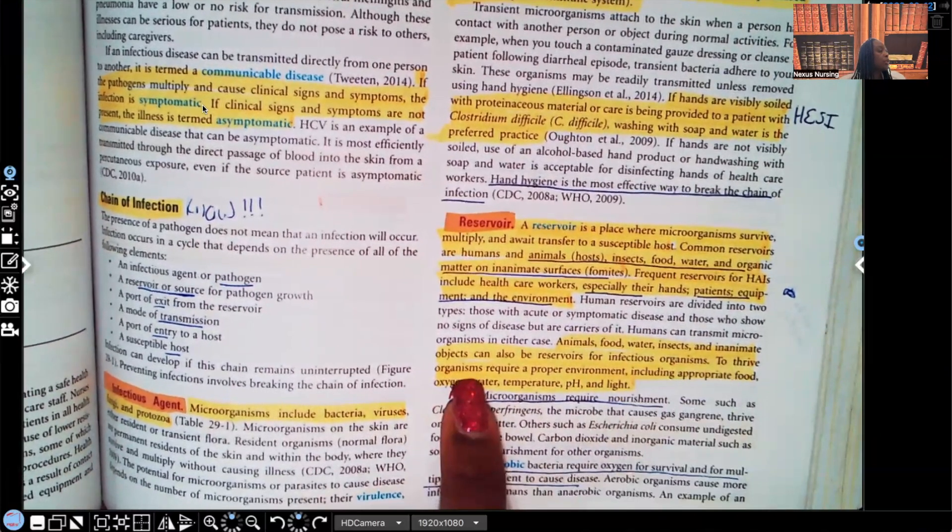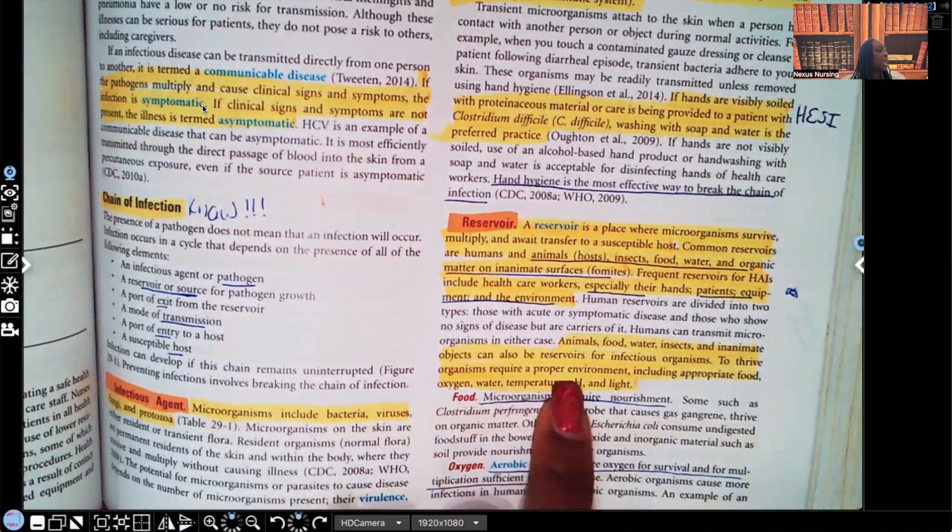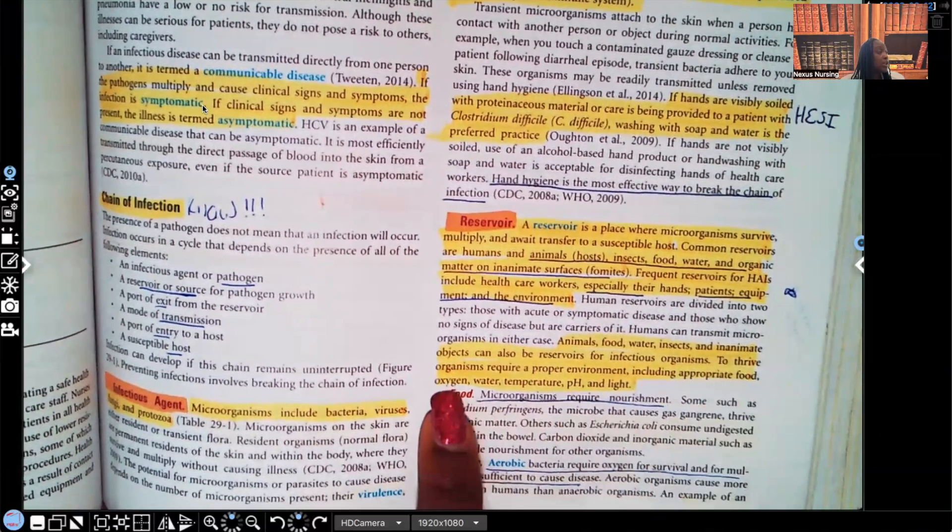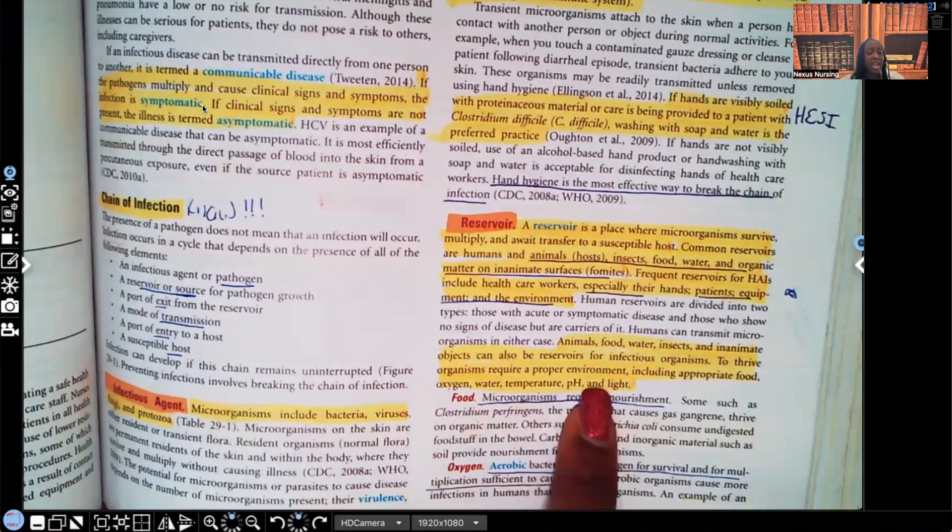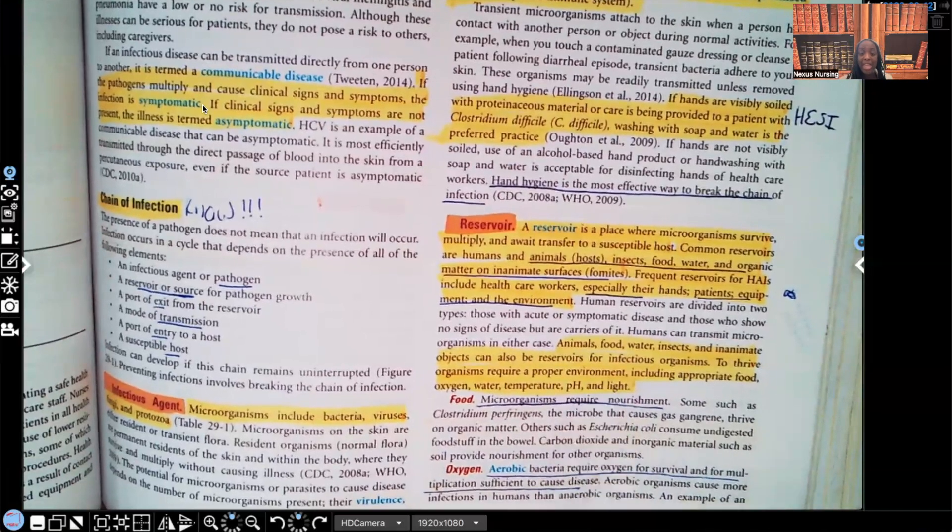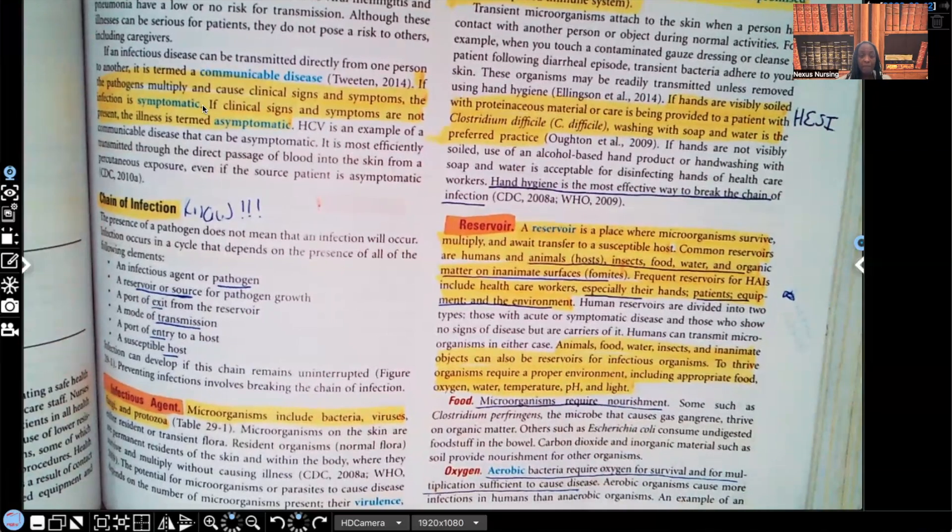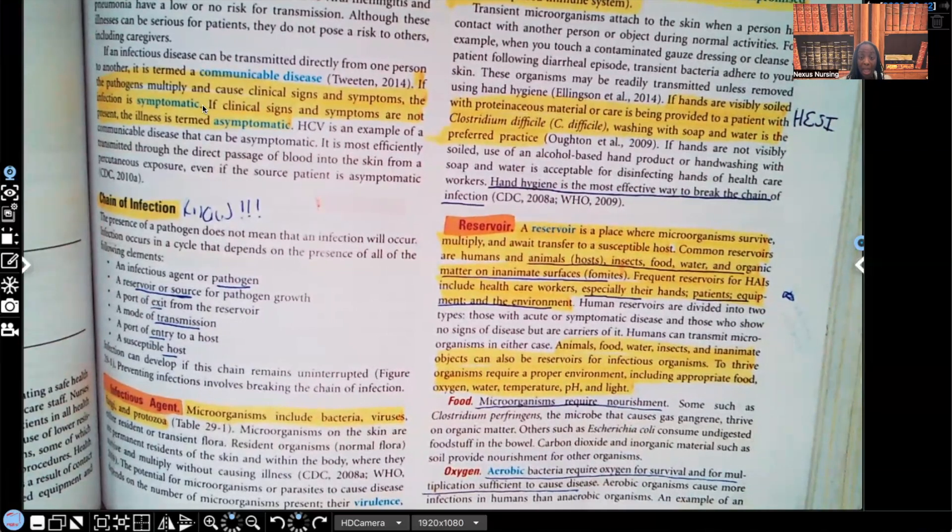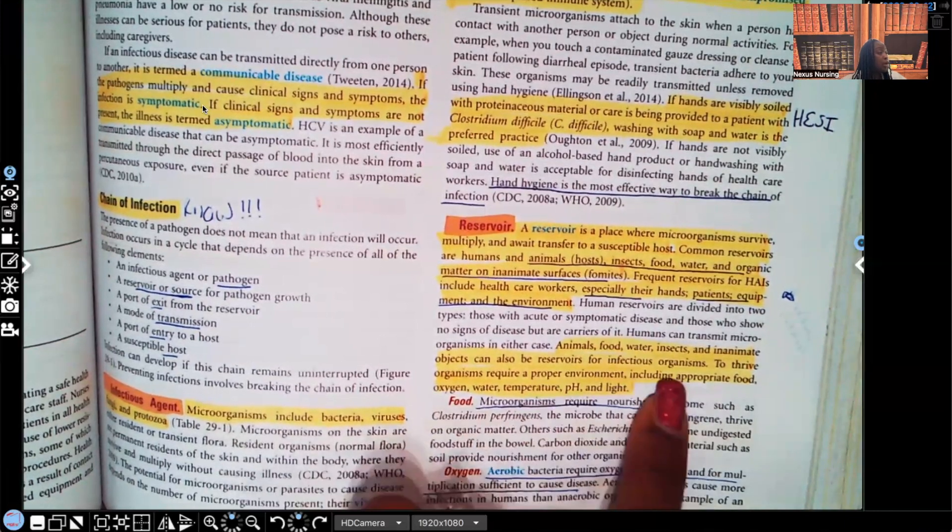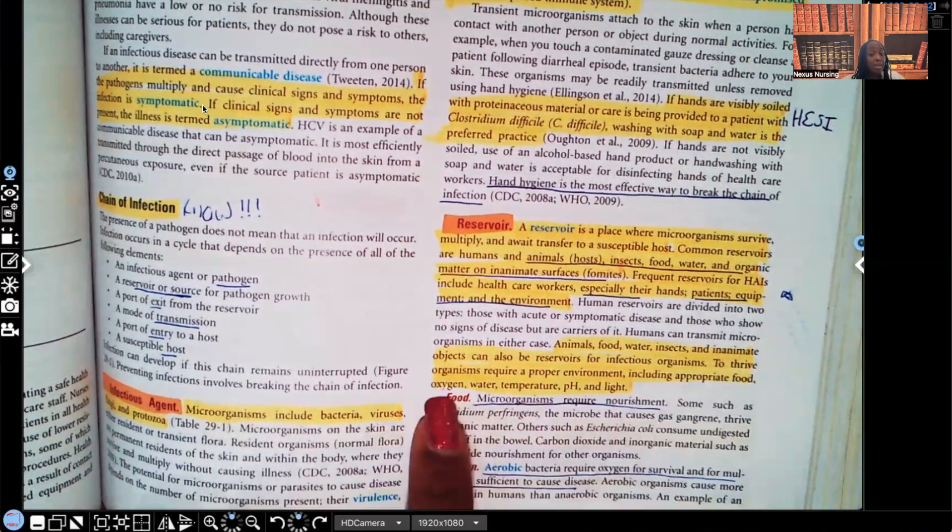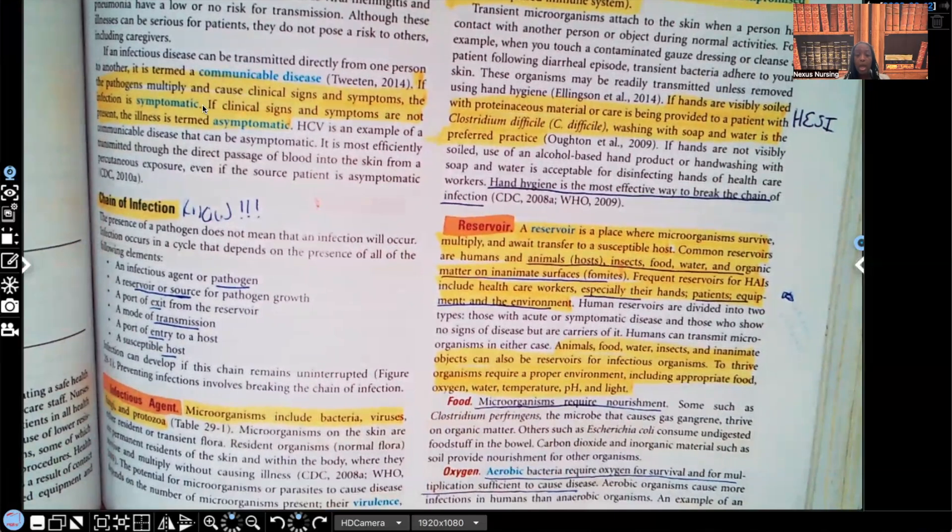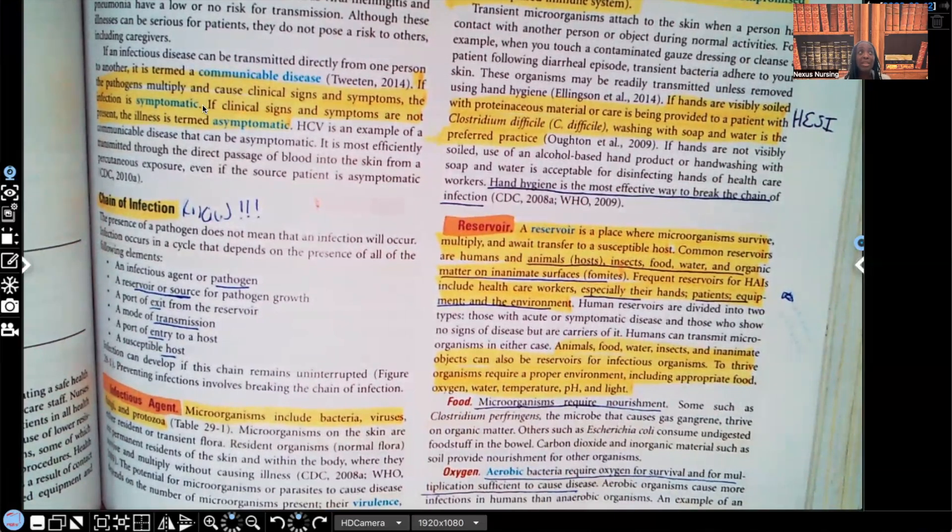So to thrive, organisms require a proper environment, including appropriate food, oxygen, water, temperature, pH, and light. I don't know why I didn't highlight this in a different color, but I should have. This is very important for you guys to know. In order for those infectious agents to thrive, this is what they need. I'm going to repeat it. They need appropriate food, oxygen, water, temperature, pH, and light. So now let's talk about this proper environment that they need. Let's talk about it in detail. Let's start with food.